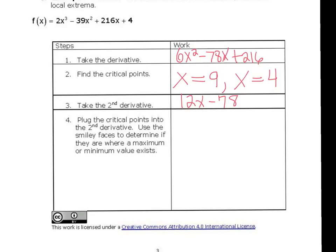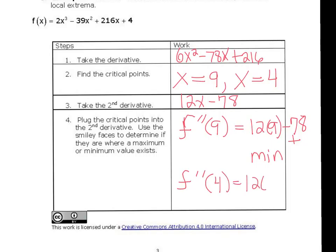So if we plug 9 into the second derivative, so f double prime of 9, we get 12 times 9 minus 78. All I need to know is whether it's going to be positive or negative. And that's going to be positive, meaning we have a minimum at x equals 9. And now I'm going to plug in 4. So 12 times 4, which is 48, minus 78. We know that's going to be negative, so we have a max at x equals 4.